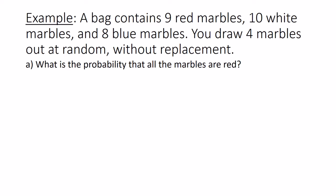You draw 4 marbles out at random without replacement. So this word without replacement is very important. Why? Because as I draw out each of my 4 marbles one at a time, I am not going to put that marble back in the bag. So this means that my events are dependent.